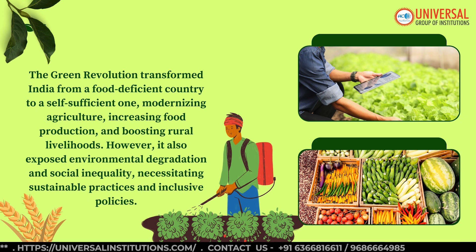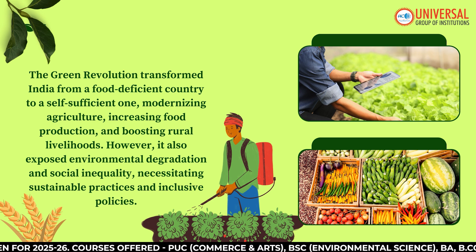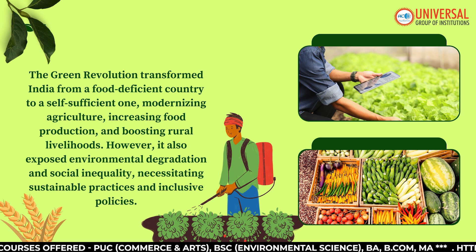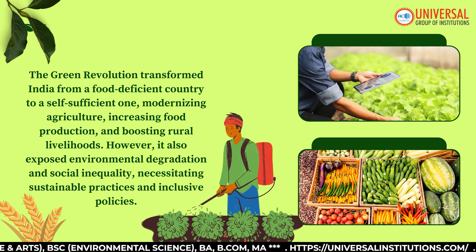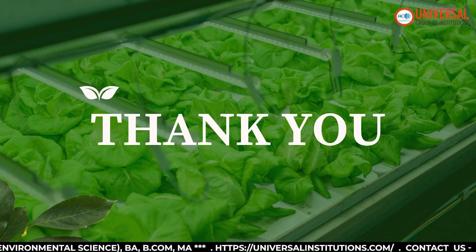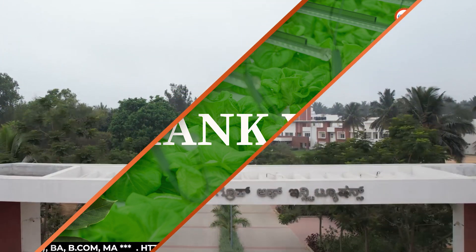The Green Revolution was a turning point in Indian agriculture, transforming India from a food-deficient country to a self-sufficient one. It modernized agriculture, increased food production, and boosted rural livelihoods. However, it also exposed challenges like environmental degradation and social inequality. Moving forward, sustainable practices and inclusive policies are essential for balanced agricultural growth.